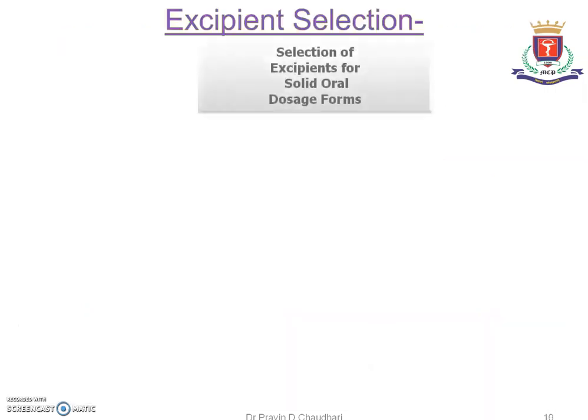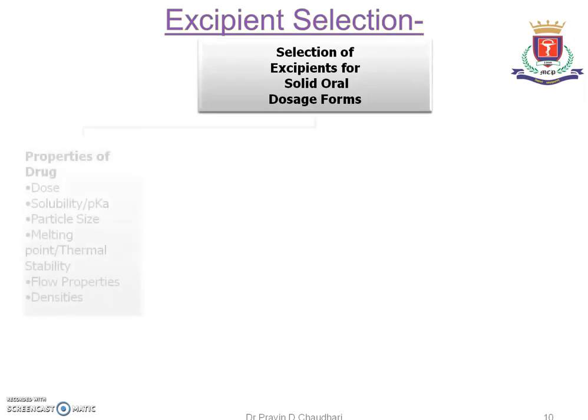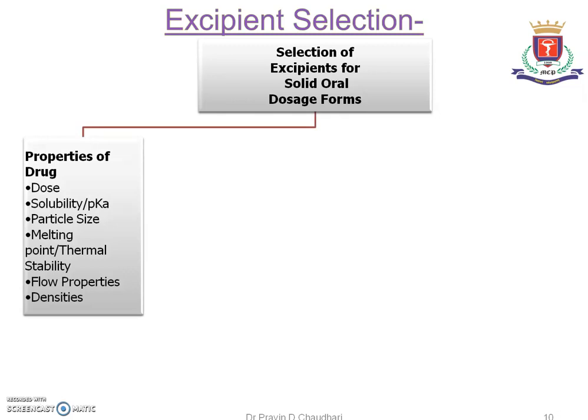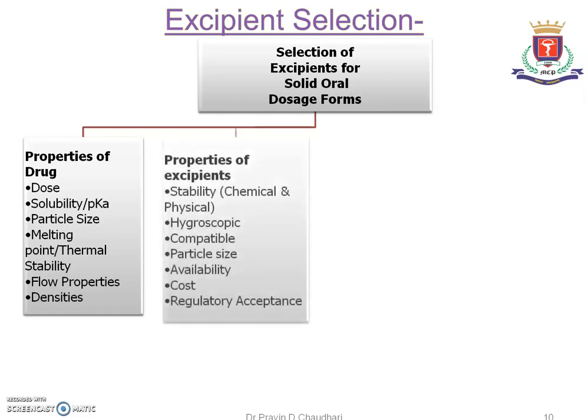Excipient selection for solid oral dosage forms depends on properties of the drug such as dose, solubility, pKa, particle size and particle size distribution, melting point, thermal stability, flow properties, and densities. Properties of excipients to consider include chemical and physical stability, hygroscopic characteristics, compatibility with the selected drugs, particle size of excipients, easy availability, economy, and cost-effectiveness, which are very important factors.